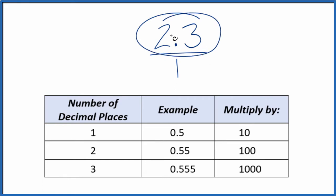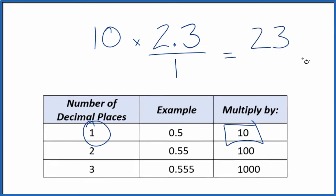Next, we want to get this numerator here to be a whole number. So I have one decimal place. I'm going to multiply that by 10. So 10 times 2.3, that equals 23. And that's a whole number.